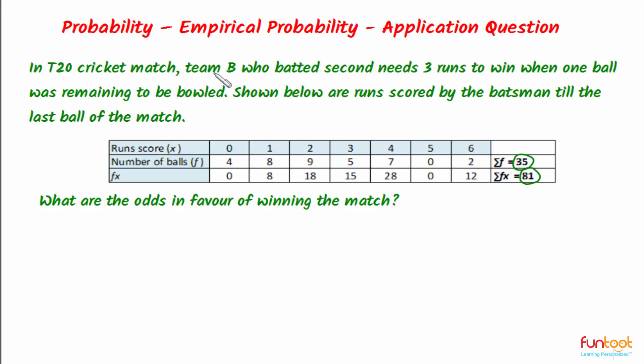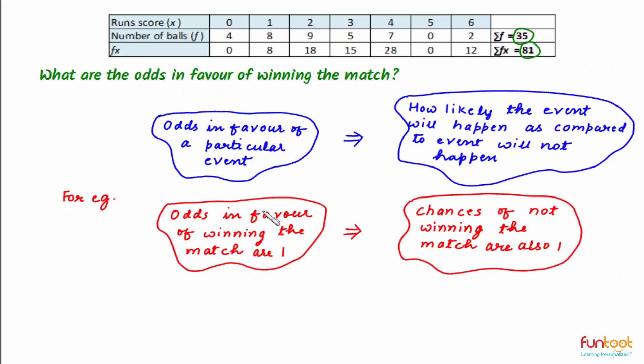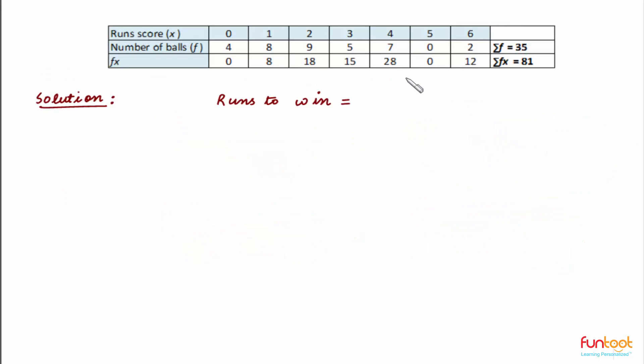What we have to find is the odds in favor of winning the match for team B. Odds in favor of a particular event means how likely the event will happen as compared to it not happening. For example, if odds in favor of winning are one, chances of winning and not winning are evenly matched. We will find the probability of winning and not winning, then find their ratio.